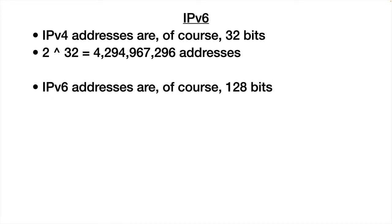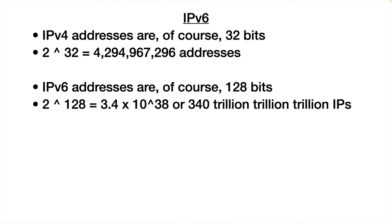IP version 6 addresses are 128 bits. With 128 things that can have two possible values, 2 to the 128th power is 3.4 followed by 37 zeros — or 340 trillion trillion trillion IP addresses that are available. Just as in 1969 they couldn't comprehend 4 billion addresses, it's hard to imagine we would be using 340 trillion trillion trillion IP addresses any time in the near future.